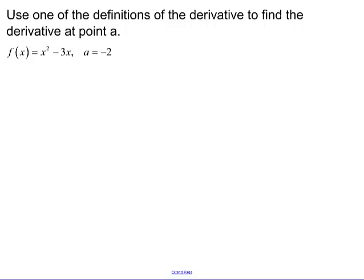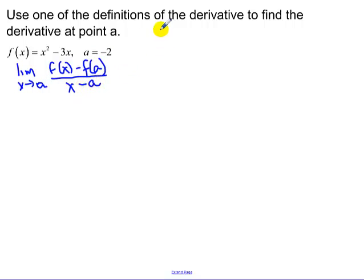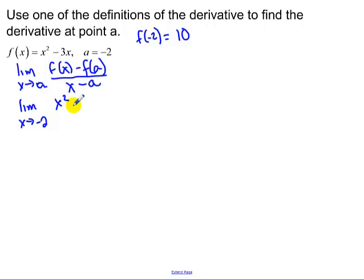Use one of the definitions of the derivative to find the derivative at a point a. When looking at a specific point, it's easiest to use the limit as x goes to a of f of x minus f of a, all over x minus a. Let's find f of negative 2 — f of negative 2 is going to be 10. Plugging everything in: f of x minus f of a, which is 10, all over x minus negative 2.